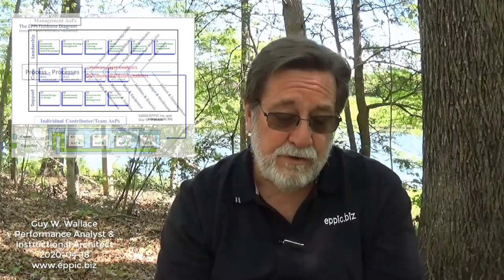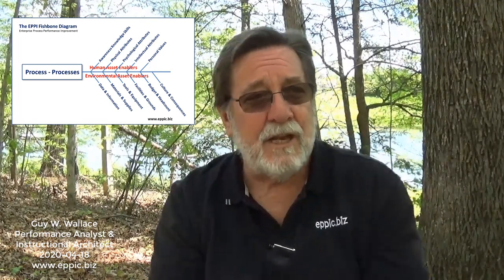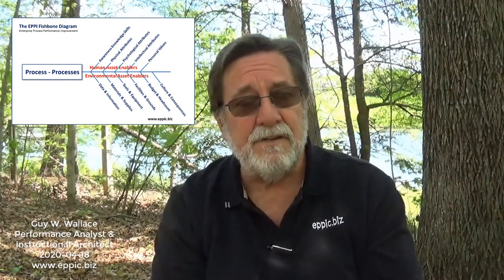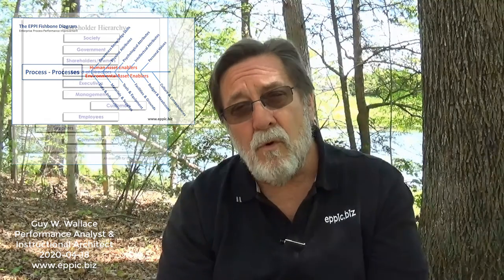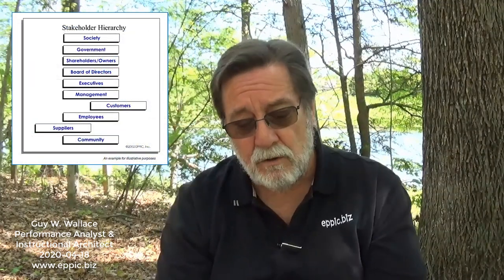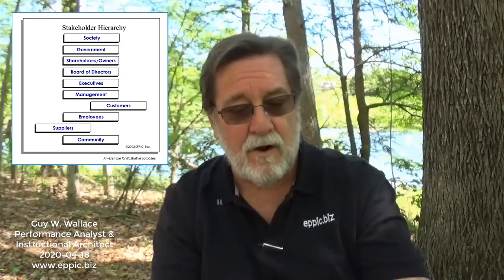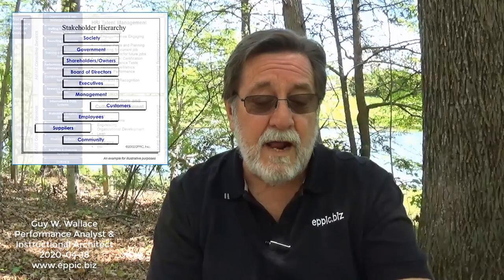The third model is my EPI Fishbone Diagram, adapted from the Ishikawa Diagram which came out of Japan in the 1950s, merged with the Behavior Engineering Model of Tom Gilbert from his book Human Competence, published in 1978. The fourth model is my stakeholder hierarchy — or hierarchies, because it's not always the same. The fifth is what I call the Enabler Provisioning Systems. Buckle up — we're going to go a little bit deeper on each one.